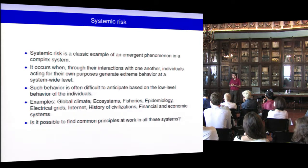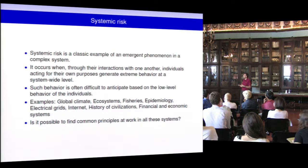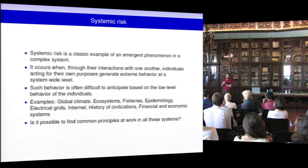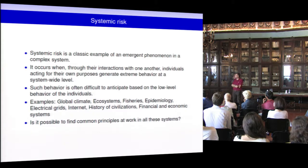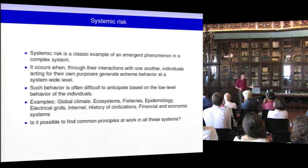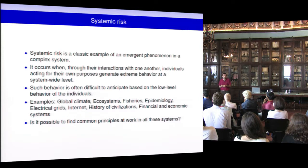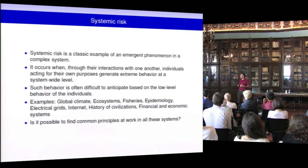There are many examples of systemic risk: global climate, ecosystems — there's a huge literature on systemic risk in ecosystems and fisheries — epidemiology, and technological infrastructure like electrical grids and the internet. Of course, collapse of societies is a typical systemic risk example. Our focus will be mostly on financial and economic systems. The big challenge is to see if there is some common principle at work across all these systems, which is what some people are trying to do.